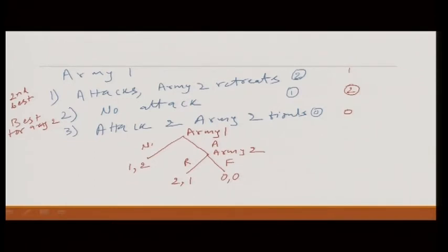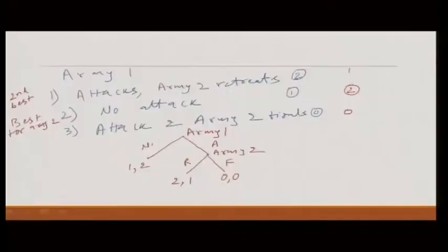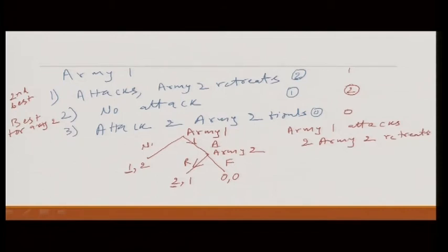We can use backward induction to solve. There is no imperfect information, so we do not have any problem in using backward induction. Army 2 at this point can see retreating gives 1 while fighting gives 0. Of course, Army 2 would prefer to retreat rather than fight. Army 1 sees this. If Army 1 decides not to attack, then Army 1 gets 1, and if Army 1 decides to attack, then Army 1 gets 2. Of course, 2 is more than 1, so Army 1 will decide to attack.